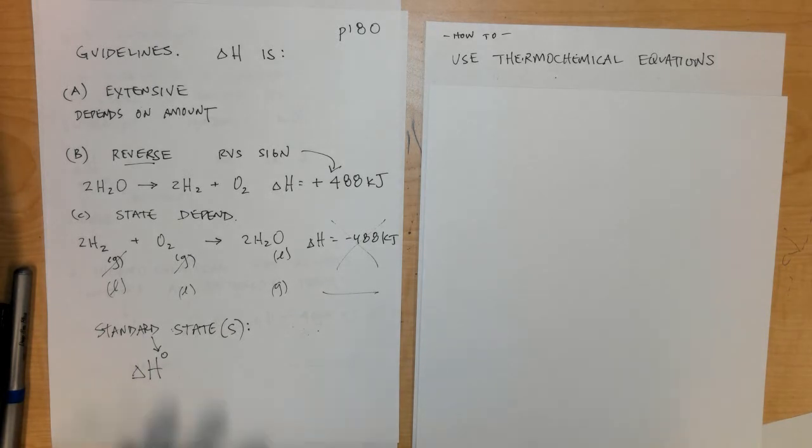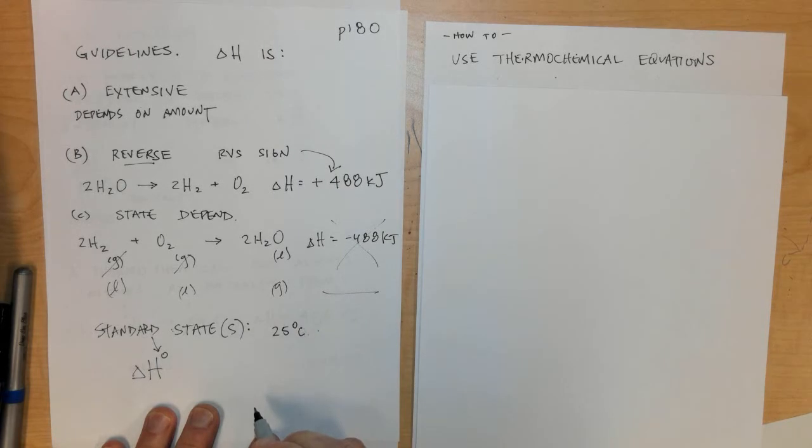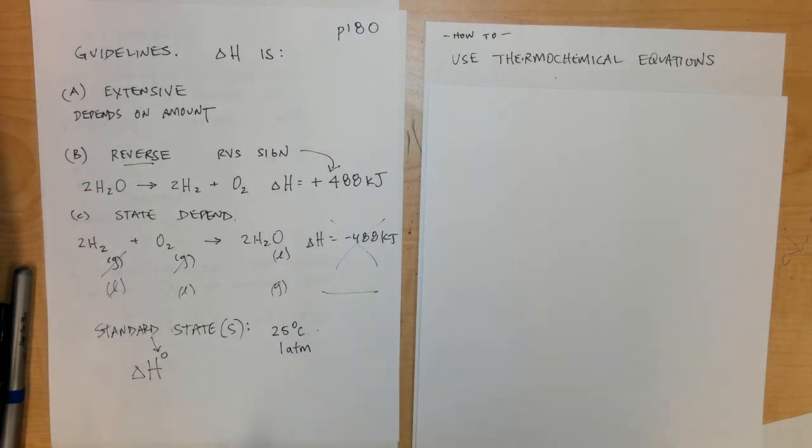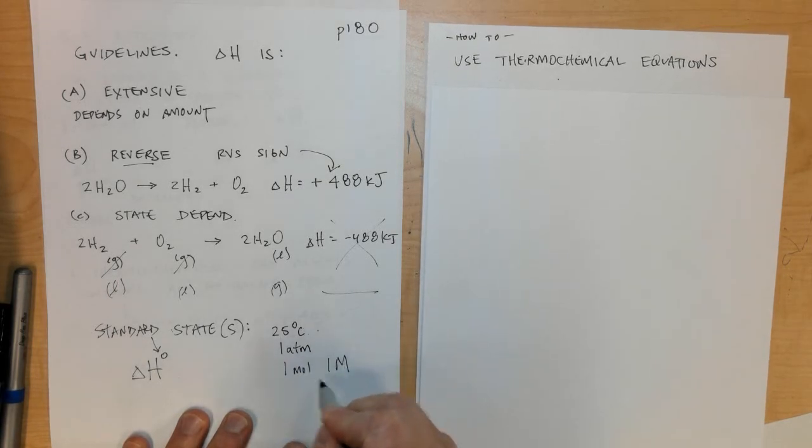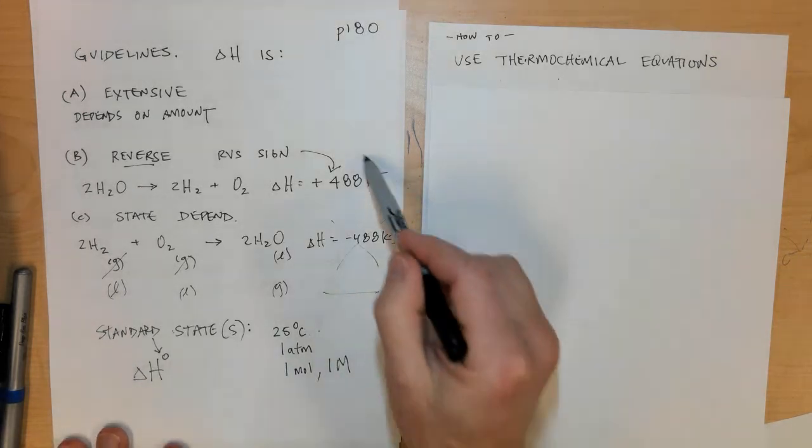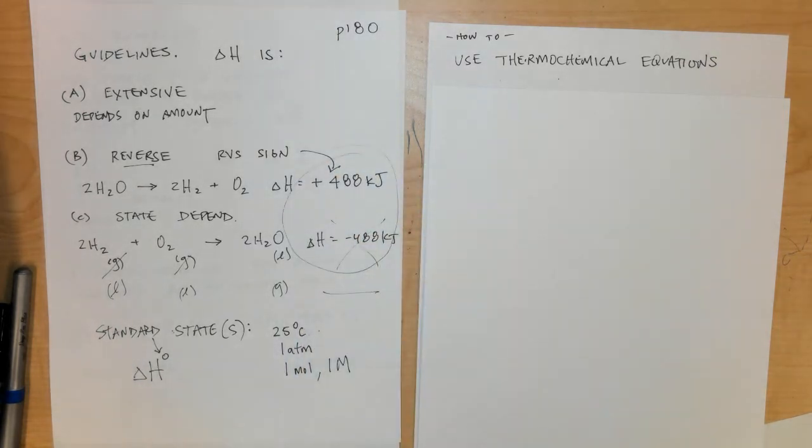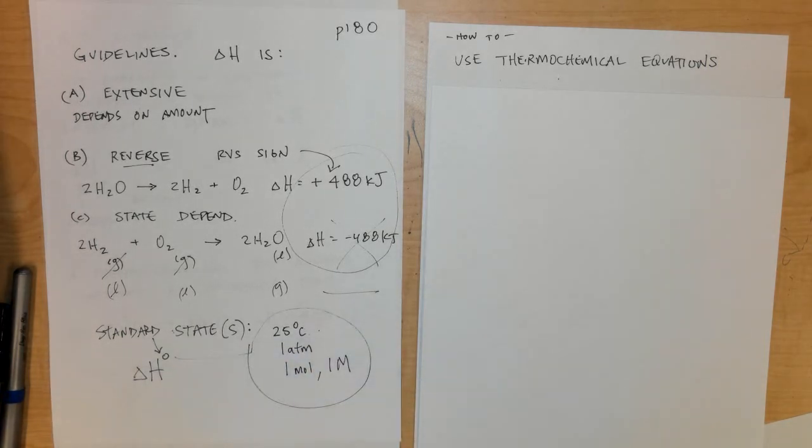Standard states for thermodynamics and enthalpy are 25 degrees Celsius, one atmosphere of atmospheric pressure, and a one molar solution. That's what we assume for almost all enthalpies that we see. Many times you'll see a little circle or degree sign in the upper right hand corner, and that simply means these conditions.